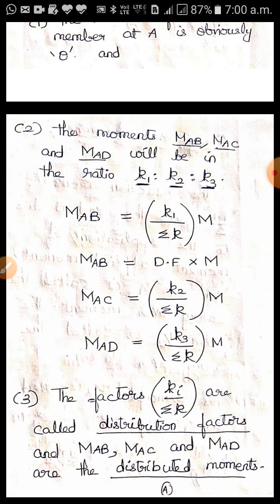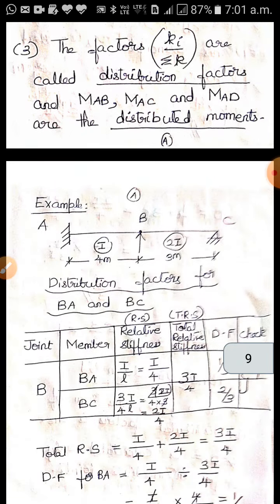So MAC = (K2/ΣK) × M and MAD = (K3/ΣK) × M. The factors Ki/ΣK are called distribution factors, and MAB, MAC, MAD are called the distributed moments.